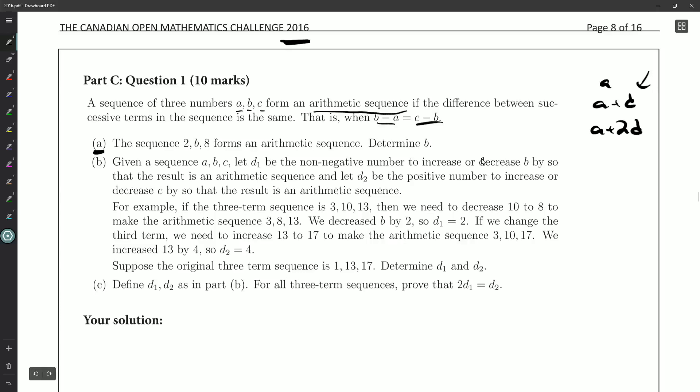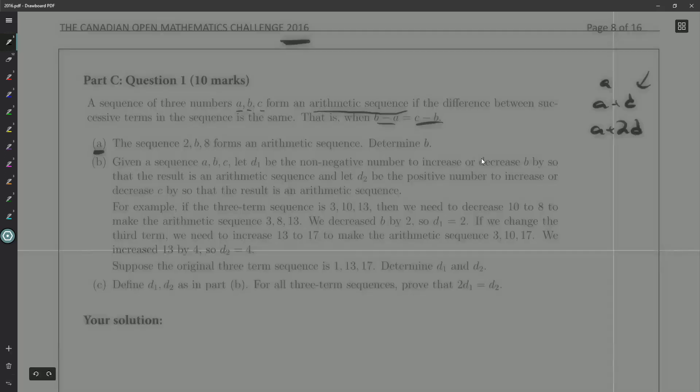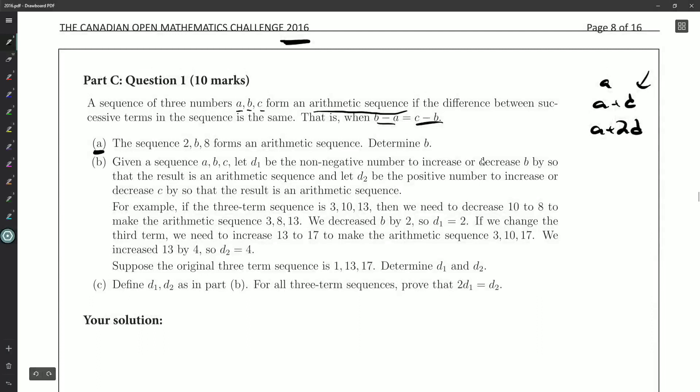And what have we got? Part A, the sequence 2, B, 8 forms an arithmetic sequence to determine B. So that shouldn't be a problem for us. So 2, B, 8, well that tells me that 8 minus B should be equal to B minus 2. So the form they gave us is quite nice and simple to work with. So bring the 2 over to the other side. 2B is equal to 10. B is equal to 5. Not much work to show there. That was probably worth one, maybe two marks. One mark for the 5, one mark for showing your work and the rearranging, that sort of thing.